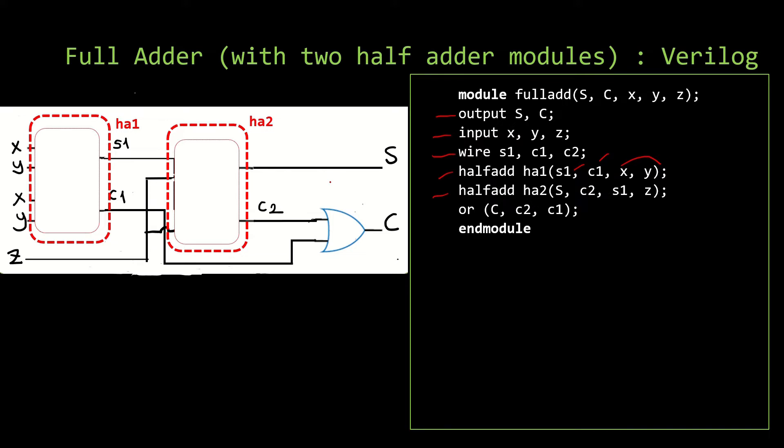And the second one having the outputs of capital S, C2, and inputs as S1 and Z. And finally, we again have our OR gate.